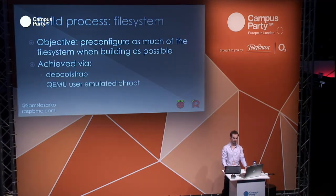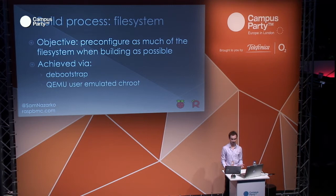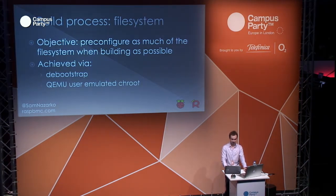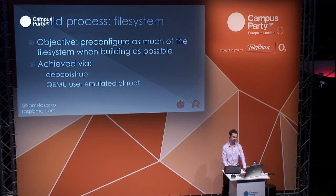With the file system, we want to configure as much as possible on the desktop. The Pi is obviously slower than your desktop and you don't want the user waiting too long. This is done via bootstrap and a change root jail. We use QEMU to allow us to run ARM binaries on the desktop. After change-rooting, packages can be installed via apt and configured as if we were running on a Pi itself. That's then tarred up. I don't add kernel modules or XBMC binaries at this stage because we want that to be handled by the update system to be truly modular.